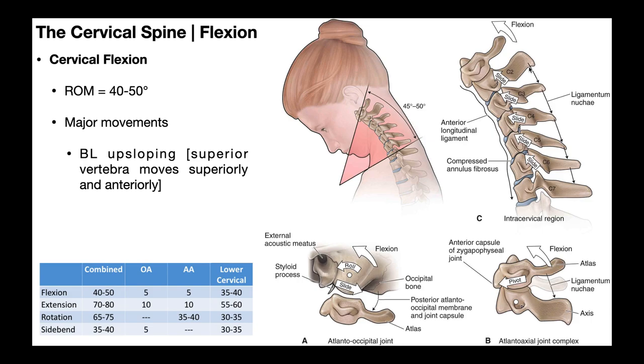That also means that any ligament posteriorly, including the ligamentum nuchae, is actually going to be put on tension. So when we go into cervical flexion, the ligamentum nuchae is put in tension. And actually, part of the restriction of cervical flexion is the ligamentum nuchae, although there are a lot of other structures involved as well.